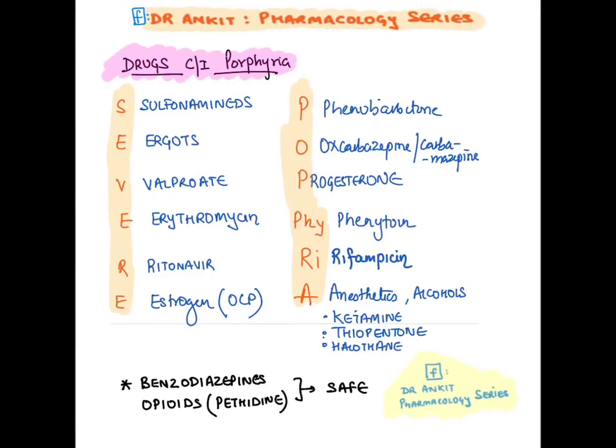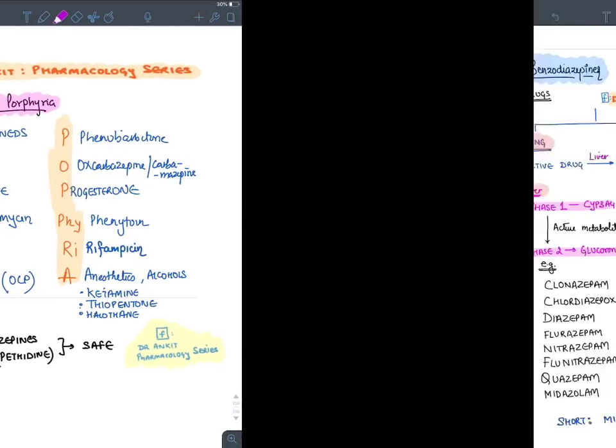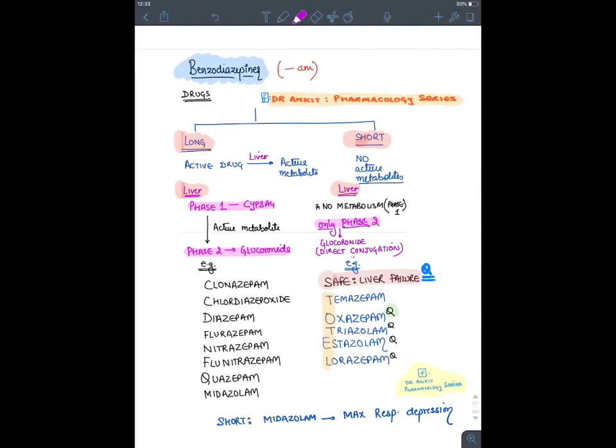Barbiturates are contraindicated in porphyria, while benzodiazepines and opioids can be given in porphyria. The mnemonic 'SEVERE PORPHYRIA' lists drugs contraindicated in porphyria, including phenobarbitone and thiopentone.